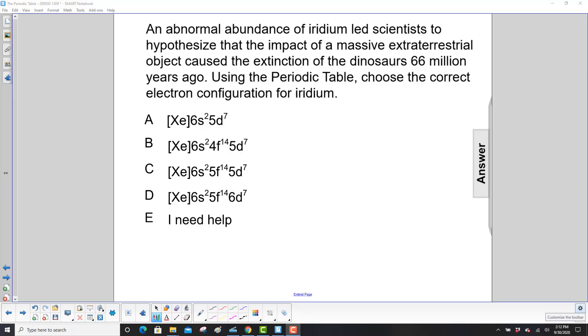An abnormal abundance of iridium led scientists to hypothesize that the impact of a massive extraterrestrial object caused the extinction of the dinosaurs 66 million years ago. Using the periodic table, choose the correct electron configuration for iridium.